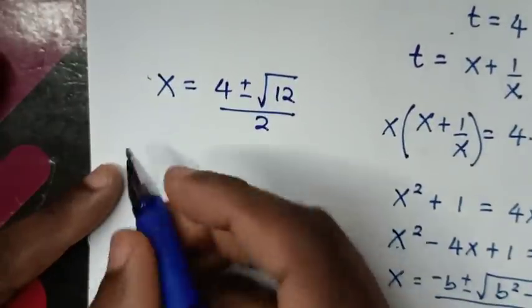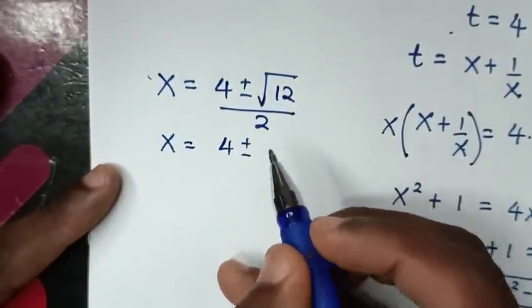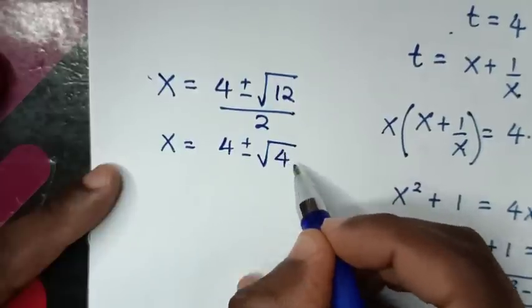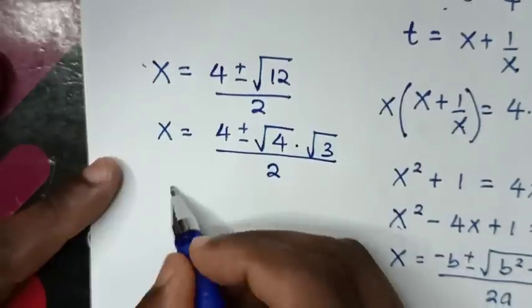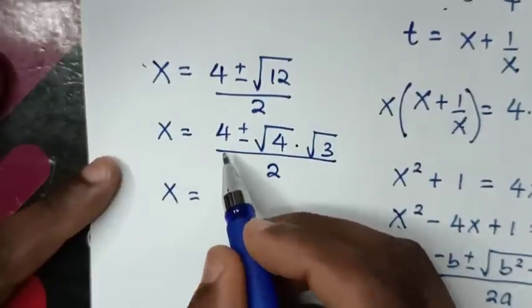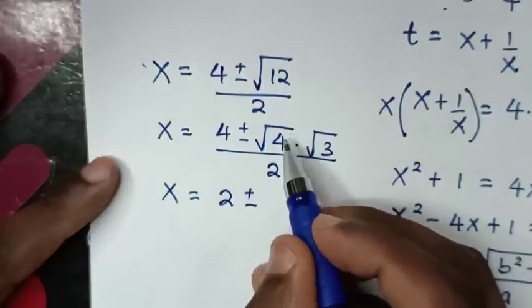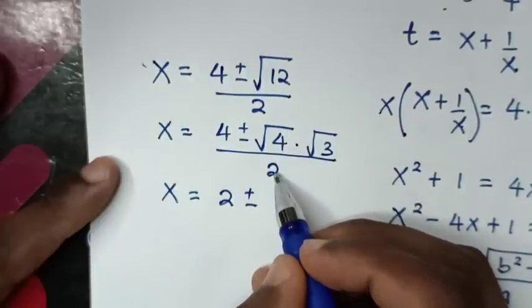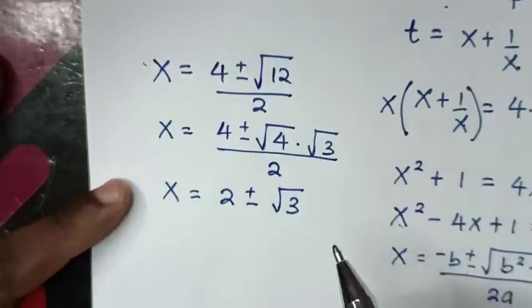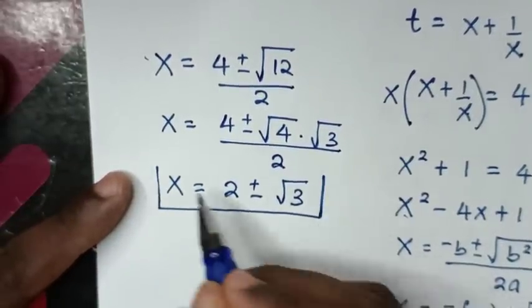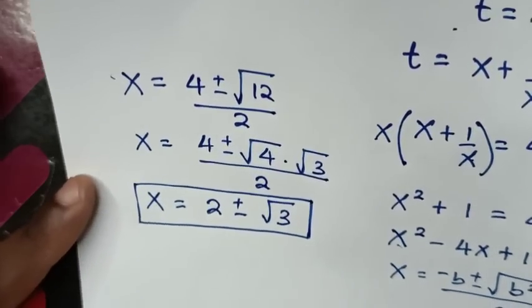Simplifying: square root of 12 is the same as square root of 4 times square root of 3. So x equals 4 plus or minus 2 root 3, all over 2. Dividing through by 2 gives x equals 2 plus or minus square root of 3. This is the value of x, and we have two answers because of the plus or minus.